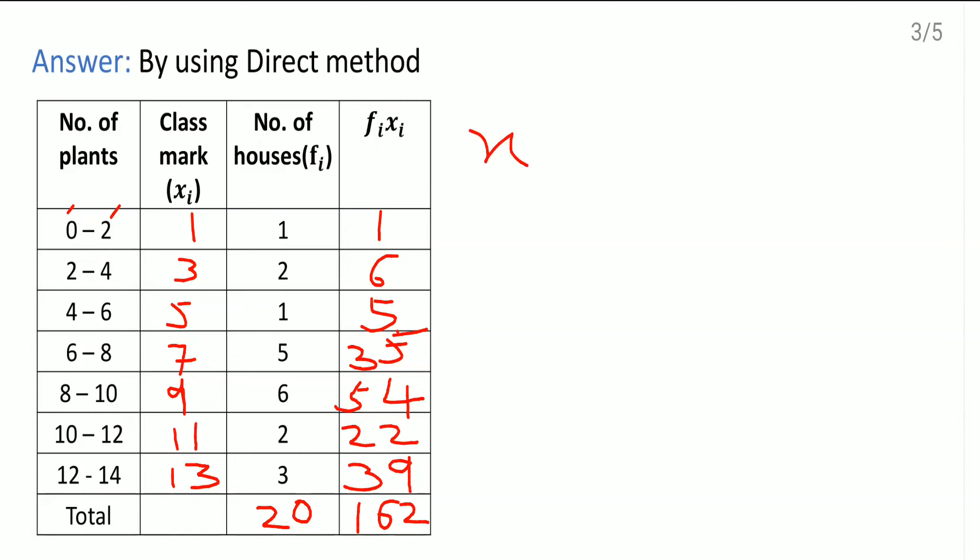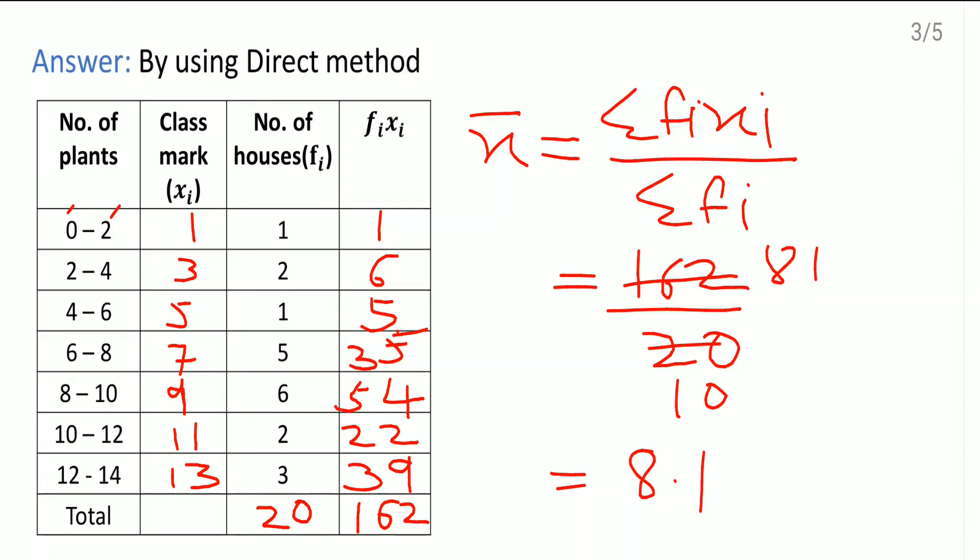Now to get the mean, this is the formula. X bar equals sigma fi xi divided by sigma fi, which equals 162 by 20. So here 2 ones are, this is 0. 2 eights are 16 and 2 ones are 2. 81 by 10, which means 8.1. So finally, the mean number of plants per house is 8.1. I hope all of you understood this sum. Thank you.